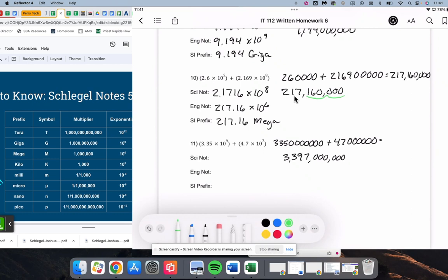So, scientific notation. We're going to go 1, 2, 3, 4, 5, 6, 7, 8, 9. And we get 3.397 times 10 to the 9th. 9 is a multiple of 3, so that will be the same for engineering notation.